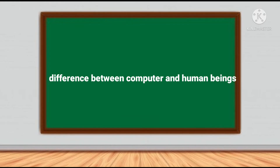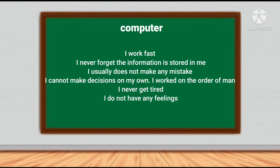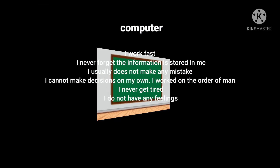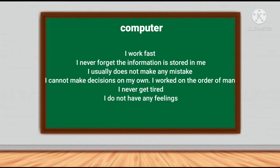Difference between computers and human beings. Computer: I work fast. I never forget — the information is stored in me. I usually do not make any mistake. I cannot make a decision on my own. I work on the orders of man. I never get tired. I do not have any feelings.